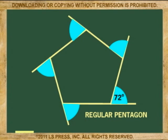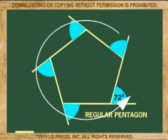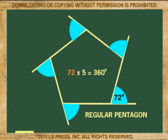Now to get the sum of all the exterior angles in a pentagon: multiply 72, that's one single exterior angle, by 5, and you get 360.